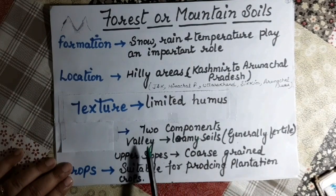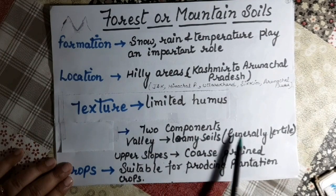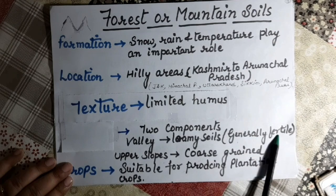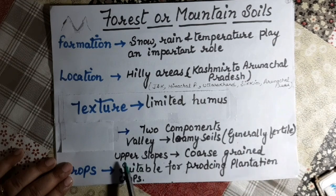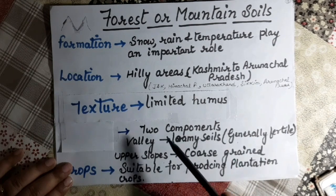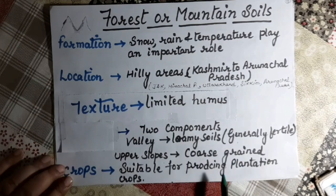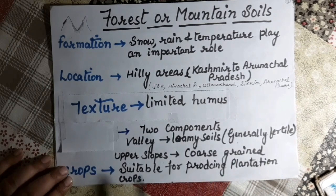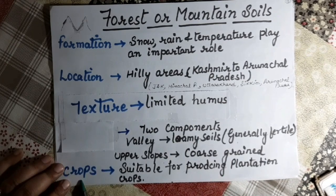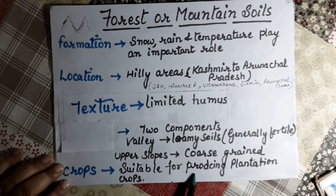In the valley portion the soil is generally fertile in nature, while on upper slopes it is less suitable. Forest soils are suitable for producing plantation crops.